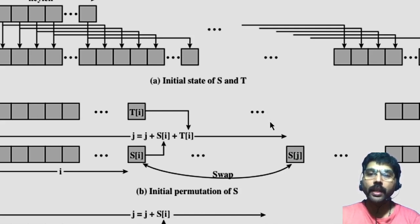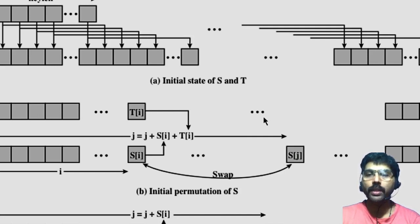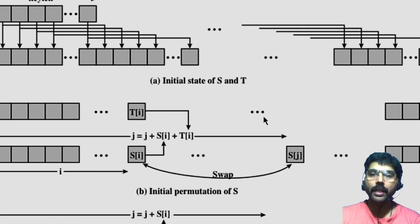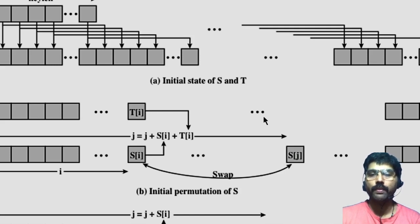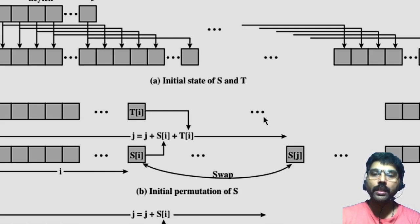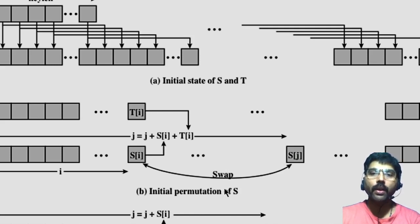At all times, S contains a permutation of all 8-bit numbers — values between 0 and 255, but not in serial order; in a random permutation format. For encryption and decryption, a byte K (the key stream) is generated from S by selecting one of the 255 entries in a systematic fashion. As each value of K is generated, the entries in S are once again permuted — the state vector is shuffled again.